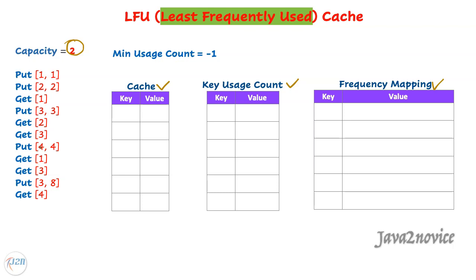Let's apply these concepts and understand the logic better. Initially the cache is empty. We make a put call with key one and value one. We will be inserting this key-value pair into the cache. We check whether the key already exists in the map before insertion. We also consider the put call as part of the usage count. So key one has a usage count of one. In the frequency map we add count one and maintain a linked list with key one. We update minimum usage count to one — by default we set this to one during any new insertion.